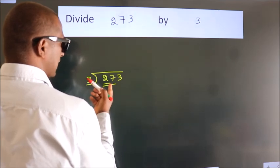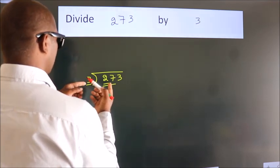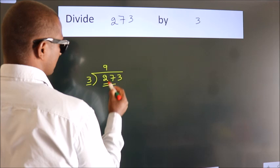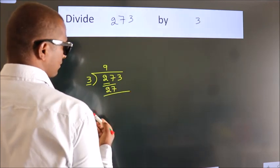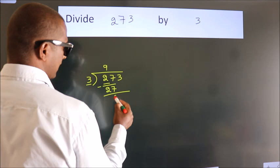When do we get 27? In 3 table. 3 nines, 27. Now, we should subtract. We get 0.